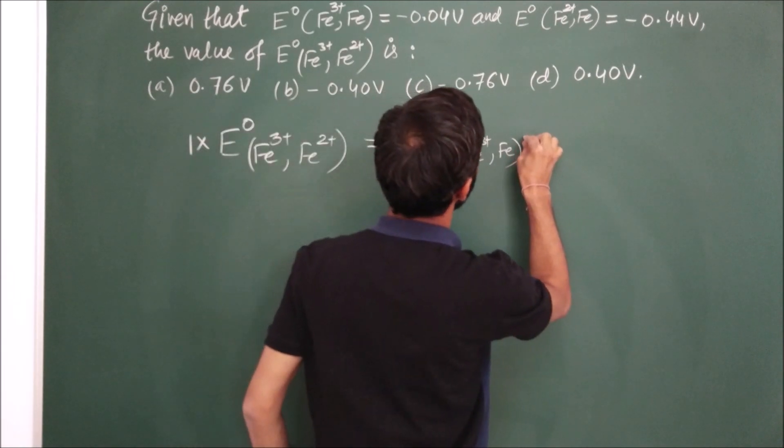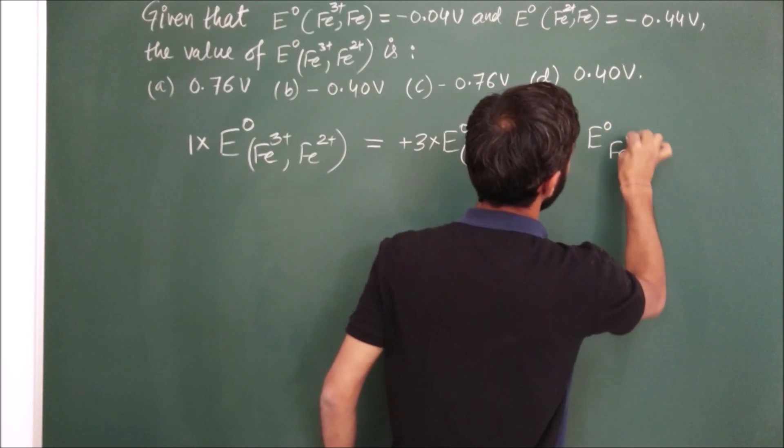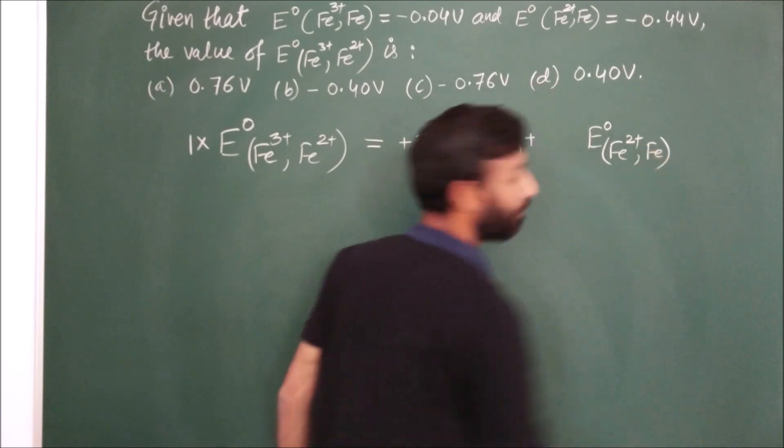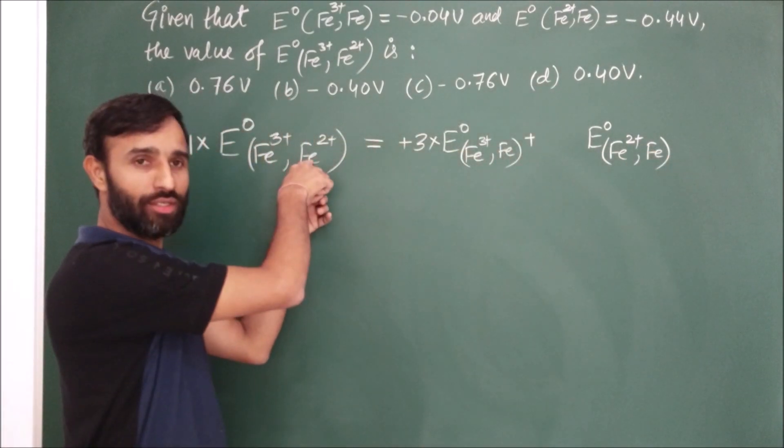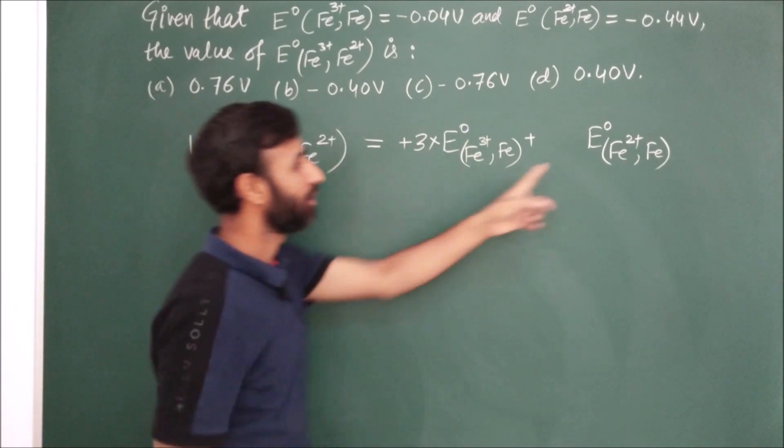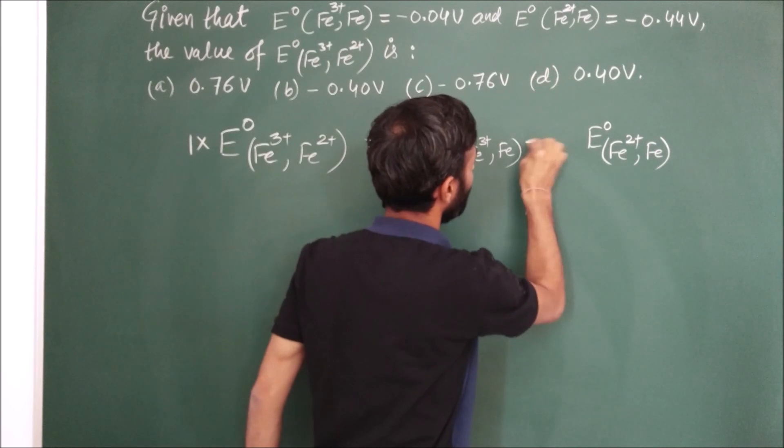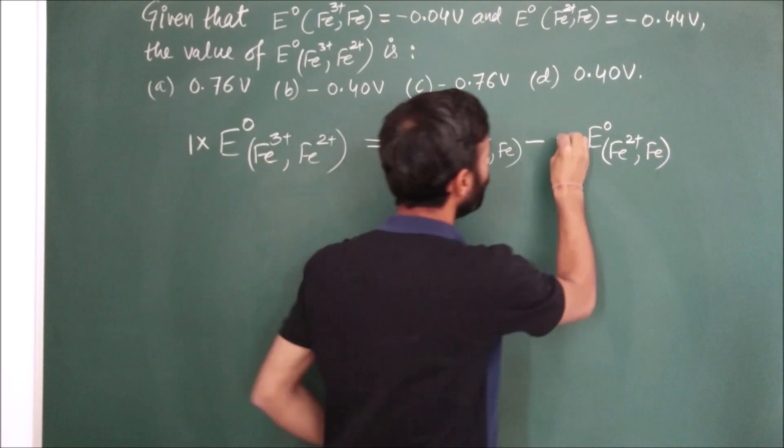Then next plus E0 of Fe2+ to Fe. Now, Fe2+ on right side. Right. Here on right side. This comes from minus sign. This comes from here. Minus. And how many electrons are involved? Two times.